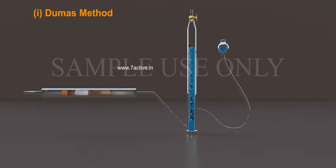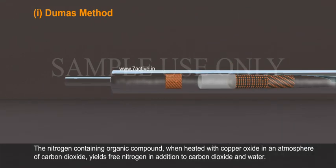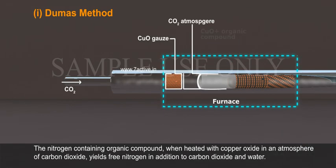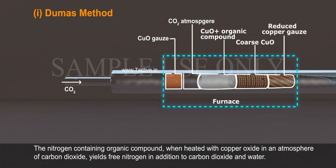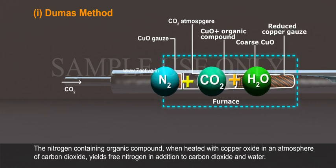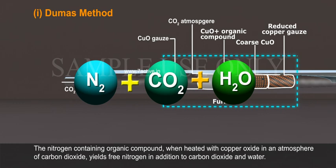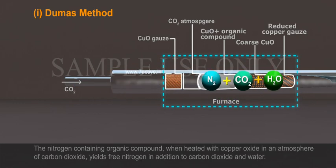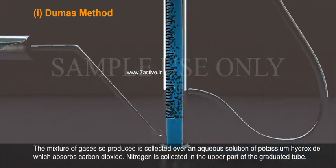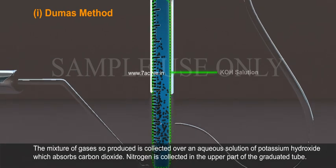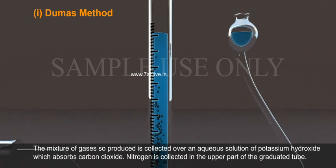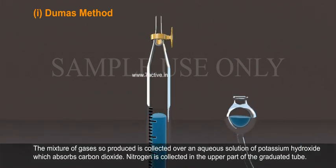Dumas method. The nitrogen-containing organic compound when heated with copper oxide in an atmosphere of carbon dioxide yields free nitrogen in addition to carbon dioxide and water. The mixture of gases so produced is collected over an aqueous solution of potassium hydroxide which absorbs carbon dioxide. Nitrogen is collected in the upper part of the graduated tube.